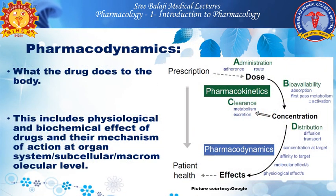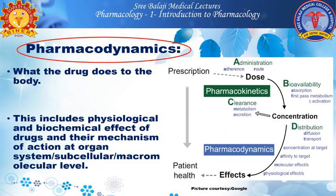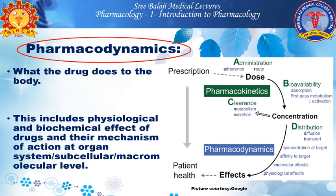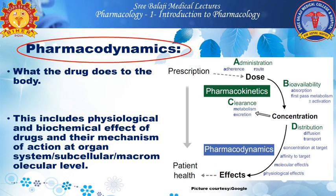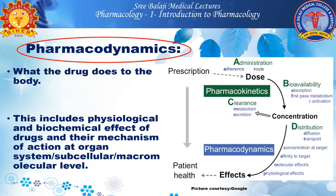Next comes the interesting topic of pharmacodynamics — what the drug does to the body. After the drug is in its active form, it will go and interact with receptors and produce action in the body to cause a physiological or pathological change. Pharmacodynamics is a separate chapter covering the physiological and biochemical effects of drugs and their mechanism of action at the cellular, subcellular, and macromolecular level.